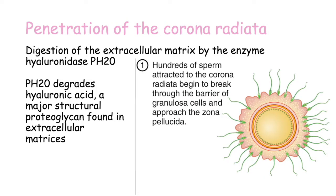The first step of fertilization is the penetration of the cumulus oophorus or corona radiata. This involves the digestion of the extracellular matrix by the enzyme hyaluronidase PH20, which degrades hyaluronic acid, a major structural proteoglycan found in extracellular matrices. This process is achieved by hundreds of sperm all trying to penetrate the corona radiata until finally they reach the zona pellucida.